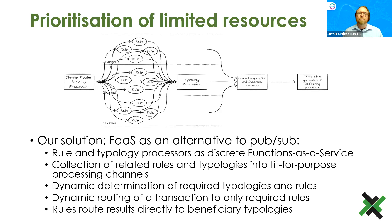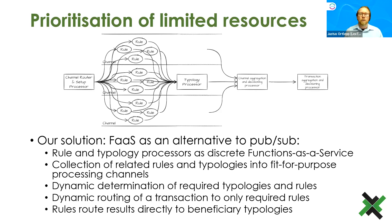We deployed a function-as-a-service architecture as an alternative to traditional publish-and-subscribe. Rule and typology processors act as discrete functions-as-a-service in forward chains — rules post their results to a typology processor, which posts to a channel aggregation and decisioning processor. The channel router and setup processor determines which rules to invoke and which typology processors are required based on channel attributes, enabling dynamic determination of required typologies and rules, invoking only what is essential to save processing time.